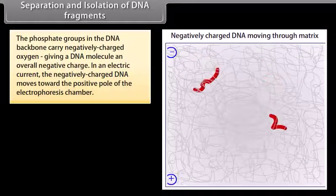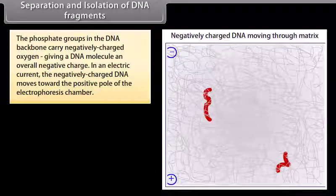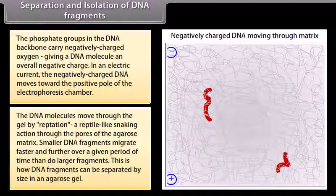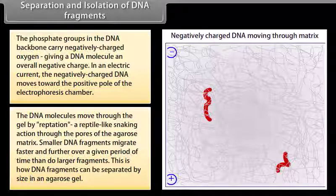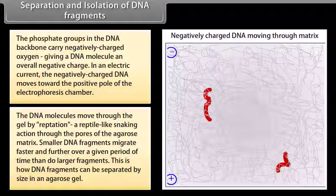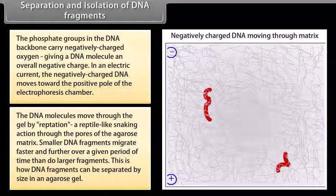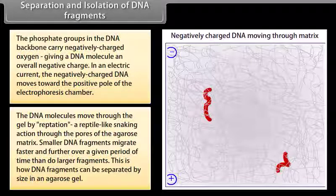The phosphate groups in the DNA backbone carry negatively charged oxygen, giving a DNA molecule an overall negative charge. In an electric current, the negatively charged DNA moves towards the positive pole of the electrophoresis chamber. The DNA molecules move through the gel by reptation, reptile-like snaking action through the pores of the agarose matrix. Smaller DNA fragments migrate faster and further over a given period of time than do larger fragments. This is how DNA fragments can be separated by size in an agarose gel.